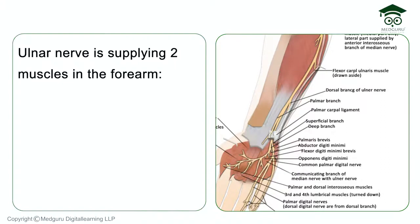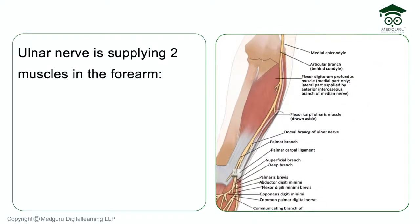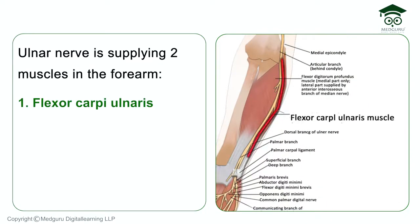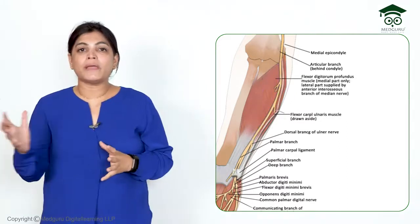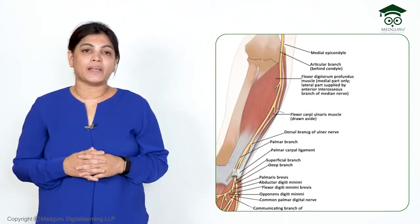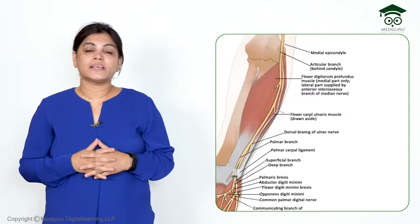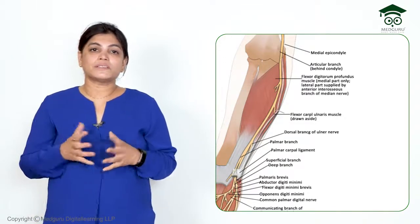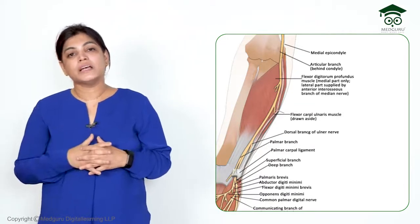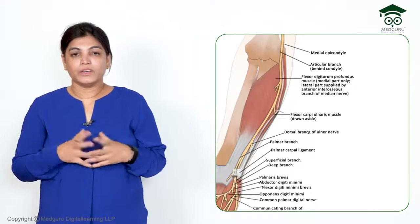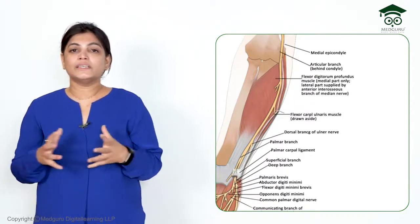In summary, the ulnar nerve supplies only two muscles in the forearm — flexor carpi ulnaris and medial half of flexor digitorum profundus — but supplies many muscles in the hand. In short, the major muscles of the hand region are supplied by the ulnar nerve. This concludes the branches and course of the ulnar nerve.